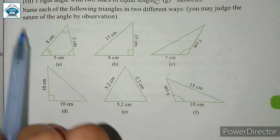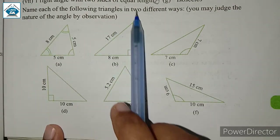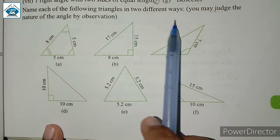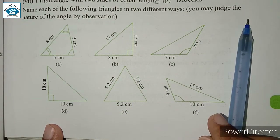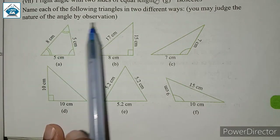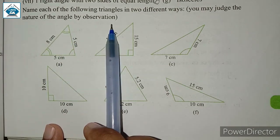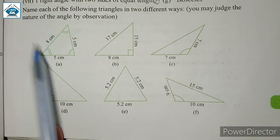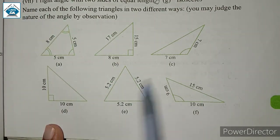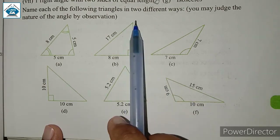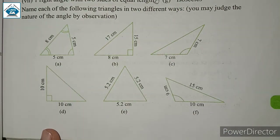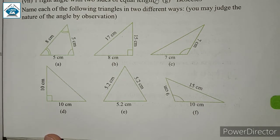Question number 3: name each of the following triangles in two different ways. You may judge the nature of the angle by observation. We know two different ways of naming: one based on sides and the other based on angles.